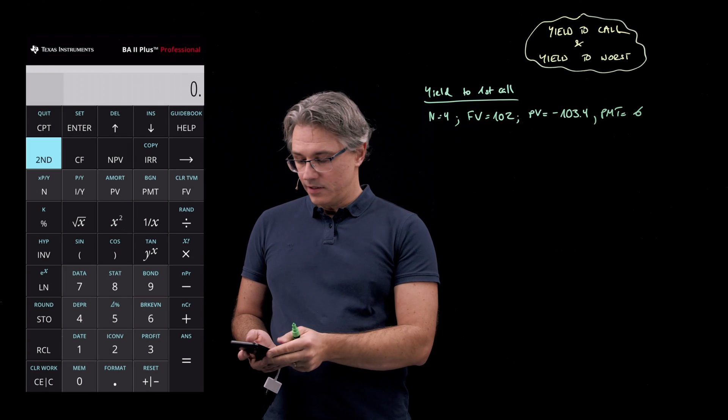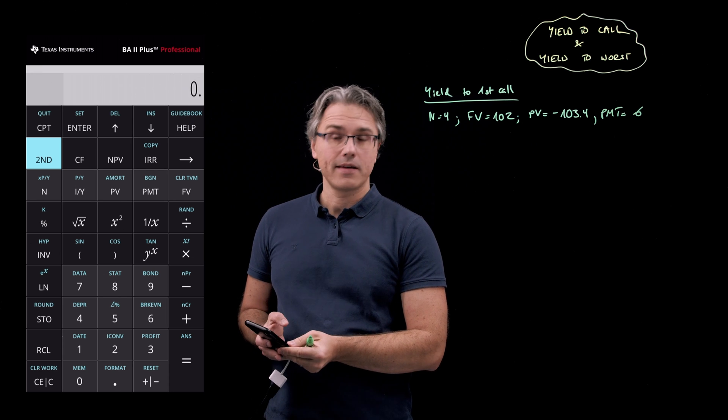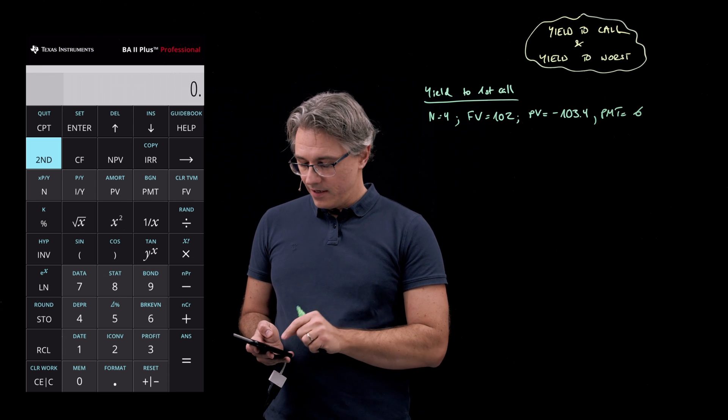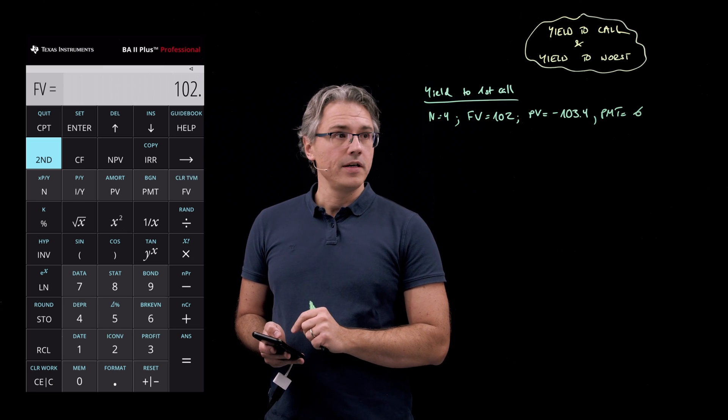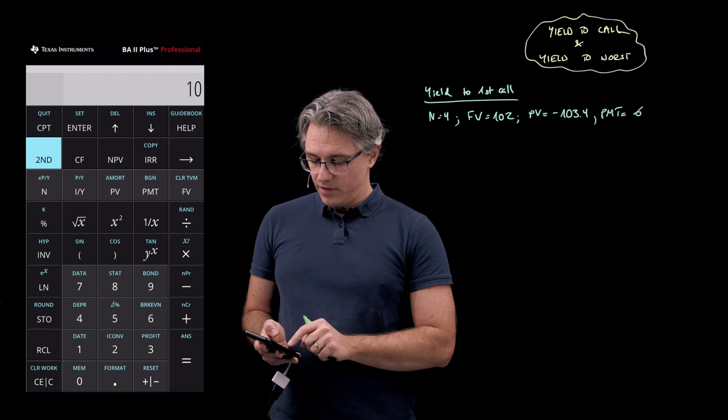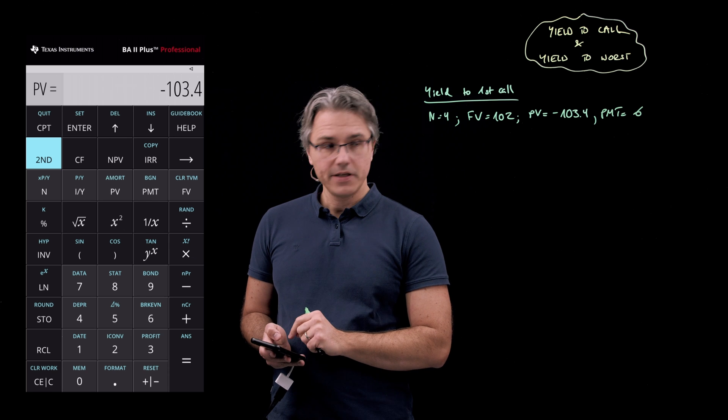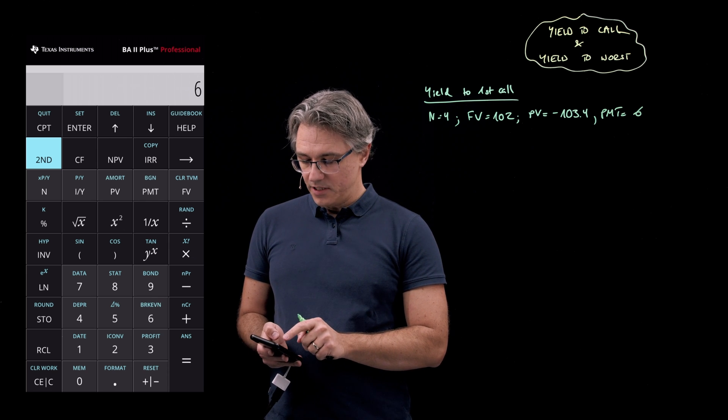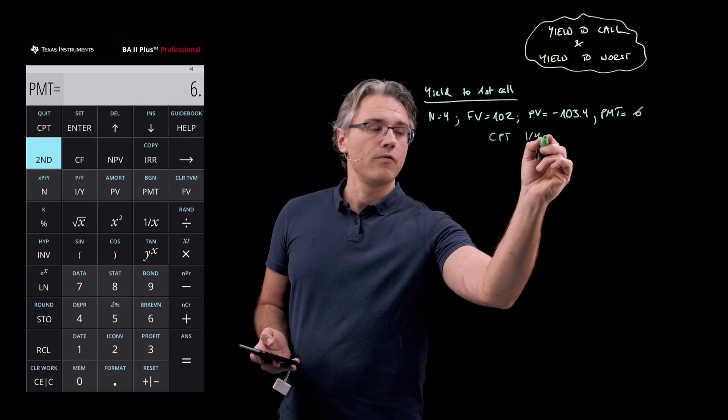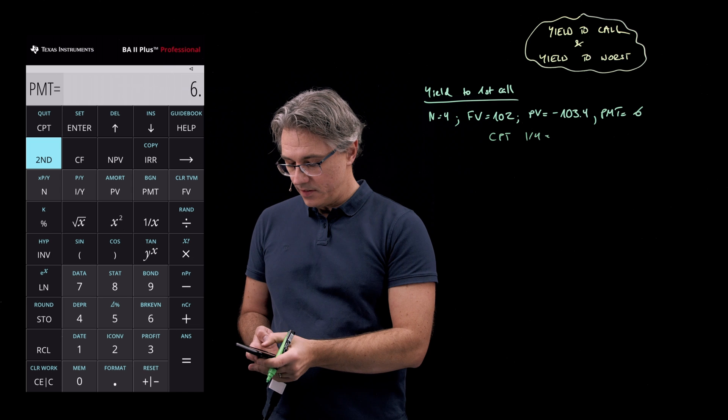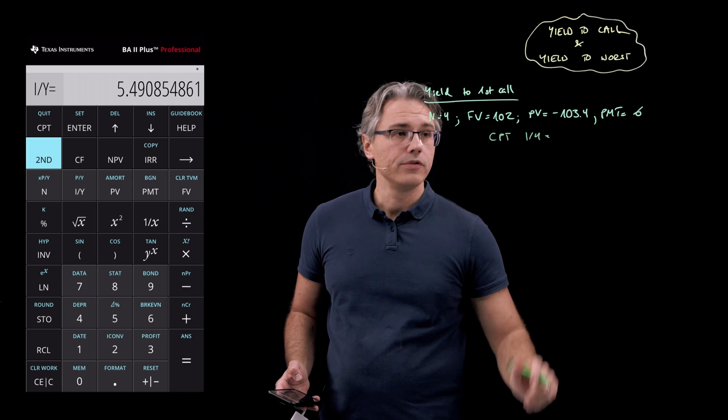I'm going to clear your time value of money worksheets, so second followed by FV. Now four for N, I've got 102 for FV, I've got 103.4 negative for PV, and six for PMT. And I'm computing, so CPT I over Y.